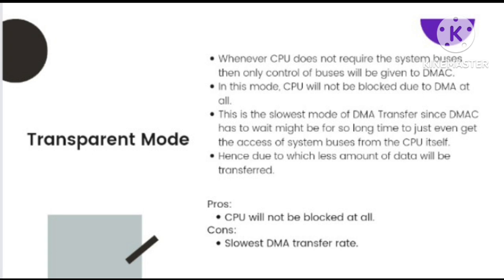Let's see what is Transparent Mode in DMA. In DMA, transparent mode refers to a DMA transfer operation in which the DMA controller accesses the memory without the involvement of the CPU or the operating system. Transparent mode is sometimes also called Bus Mastering mode. Whenever the CPU does not require the system buses, only then will control of the buses be given to the DMA controller. In this mode, the CPU will not be blocked due to DMA at all. This is the slowest mode of DMA transfer, since DMA has to wait a long time to get access to the system buses from the CPU. The DMA controller can read or write data to memory without any intervention from the CPU or the operating system, as long as the correct memory address and data size are specified.